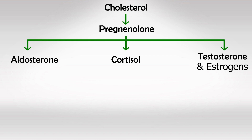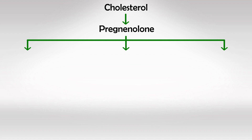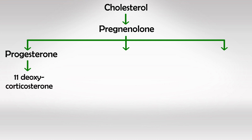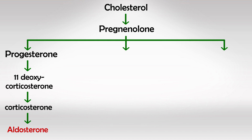Let's start with the left pathway and make some aldosterone. Pregnenolone will be converted into progesterone, which will be converted into 11-deoxycorticosterone, then into corticosterone, and then into aldosterone.